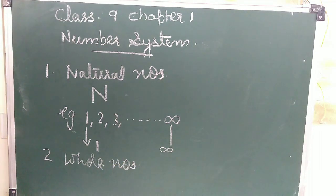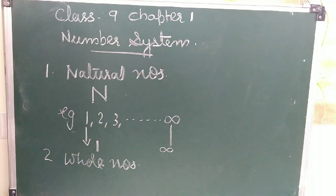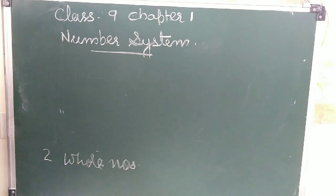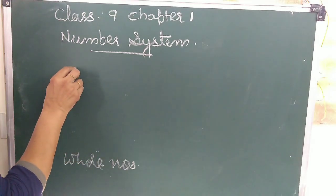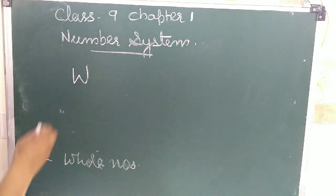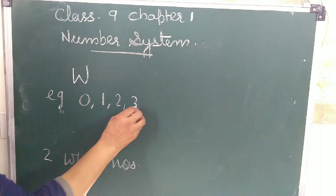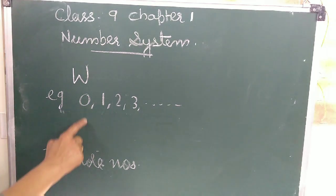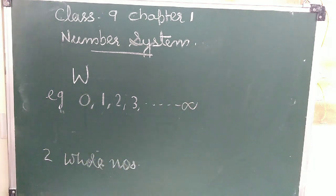The second type of numbers are whole numbers. Suppose there are three pencils in a box. I gave two pencils to my sister and one pencil to my brother. Now how many pencils are there in the box? Zero. When we include zero with natural numbers, we get another set of numbers called whole numbers, represented by the letter W. For example: 0, 1, 2, 3, and so on. Zero is the smallest whole number and infinity is the largest.